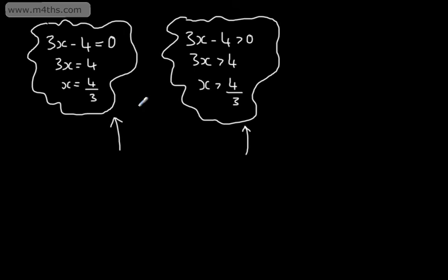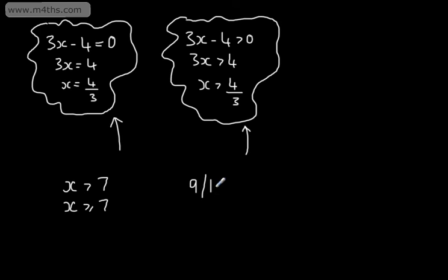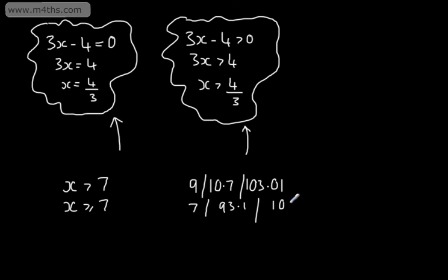Let's look at some basic notation. If x is greater than 7, we can choose a number bigger than 7 — so it could be 8, 9, or 10 — but we can't include 7 itself. If x is equal to or greater than 7, then we could include 7. Values like 9, 10.7, 103.01, 7, 93.1, or 1067.4 all satisfy this inequality.